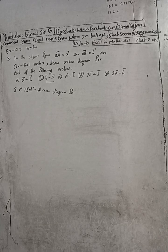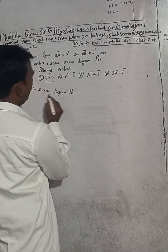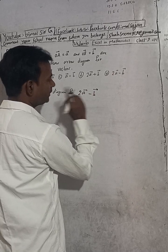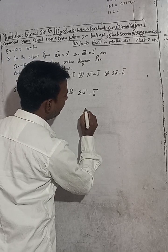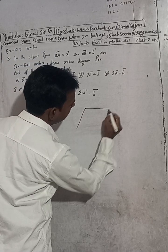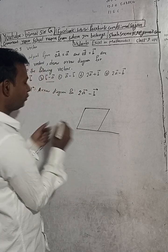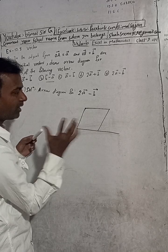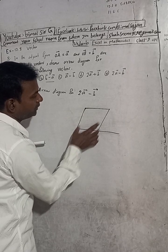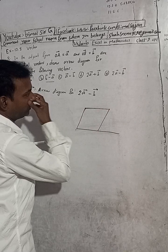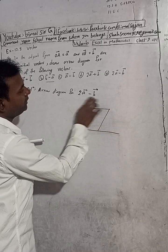This is question number 80. The solution for the error diagram for 2a vector minus b vector — for this we have to draw a parallelogram. The parallelogram properties: this side is equal to this and parallel. The upper sides are parallel, and this is also a point side, so this is equal and parallel.